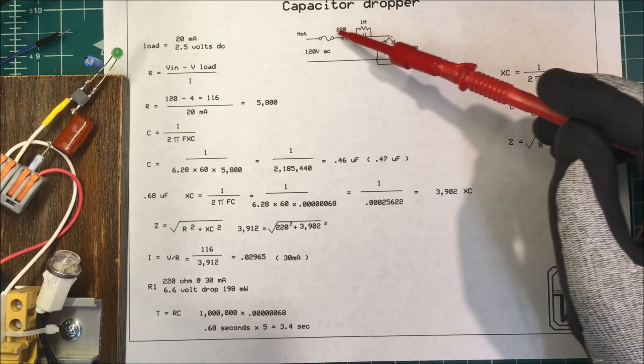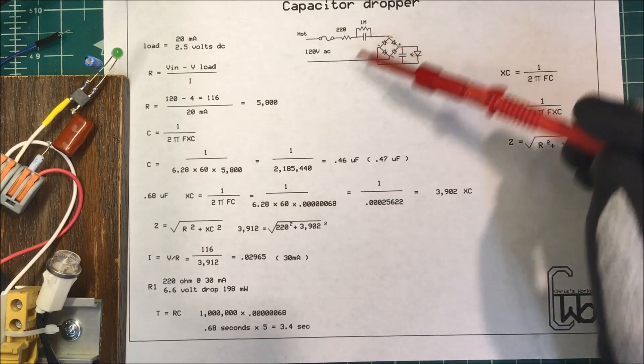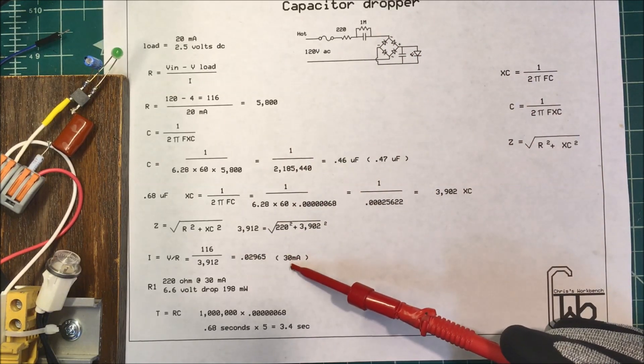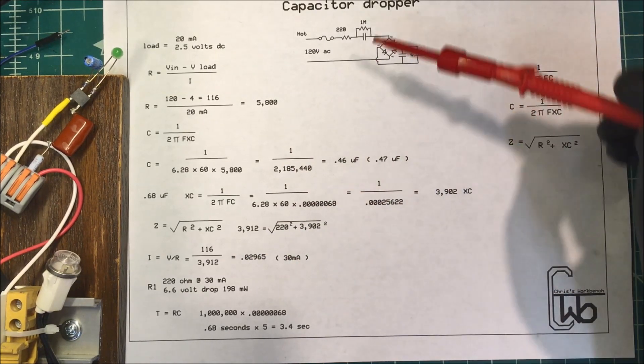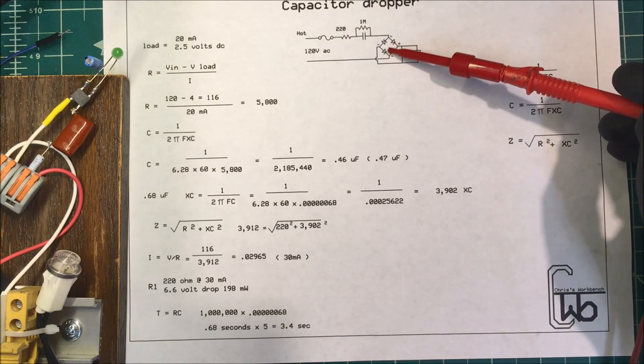Now, if this is 3,912 and I'm dropping 116 volts across here, I'm going to be drawing 30 milliamps through there, which will be fine. And that means I'll have 116 volts here and 4 volts across here.